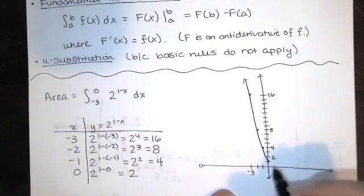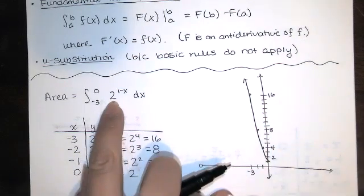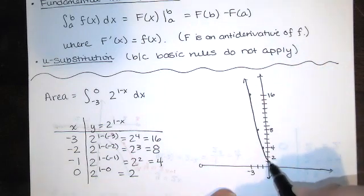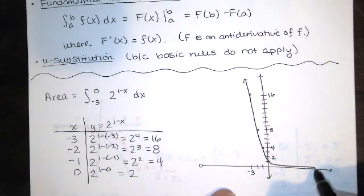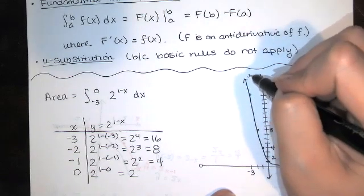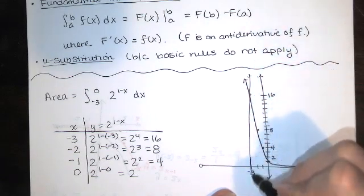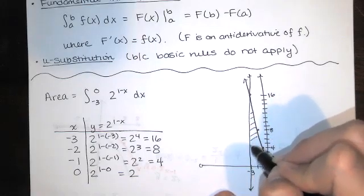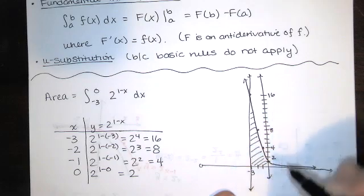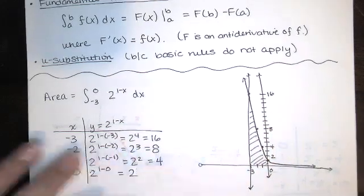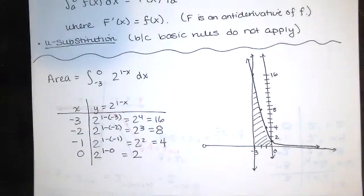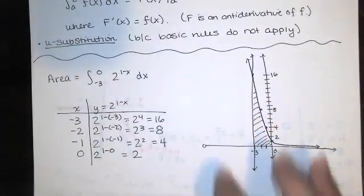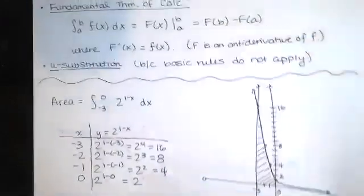You might recognize it as the graph of y=2^x. It's been flipped across the y-axis and then shifted one unit to the right. But what we're looking for here is the area between that exponential function and the x-axis for x between negative three and zero. So we're trying to find that area right there by evaluating that integral. Now you don't have to draw this to evaluate the integral but I like to visualize what it is we're doing.